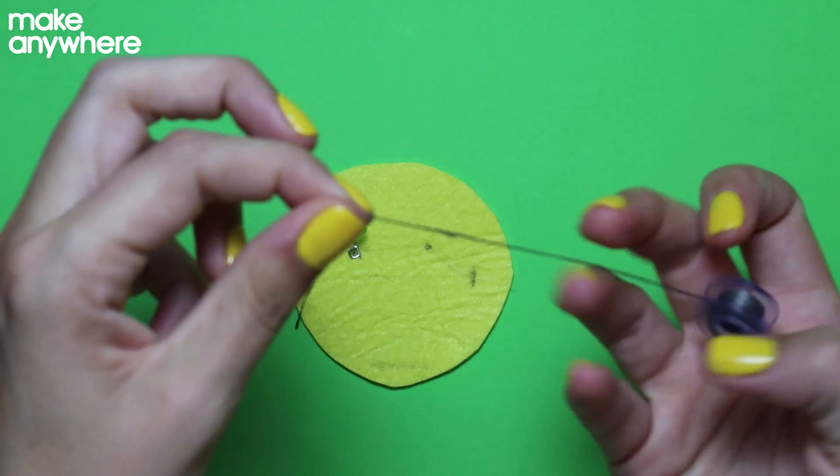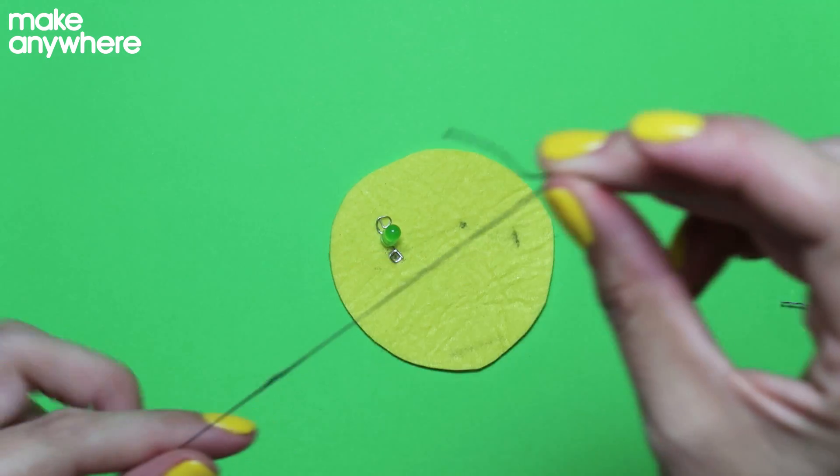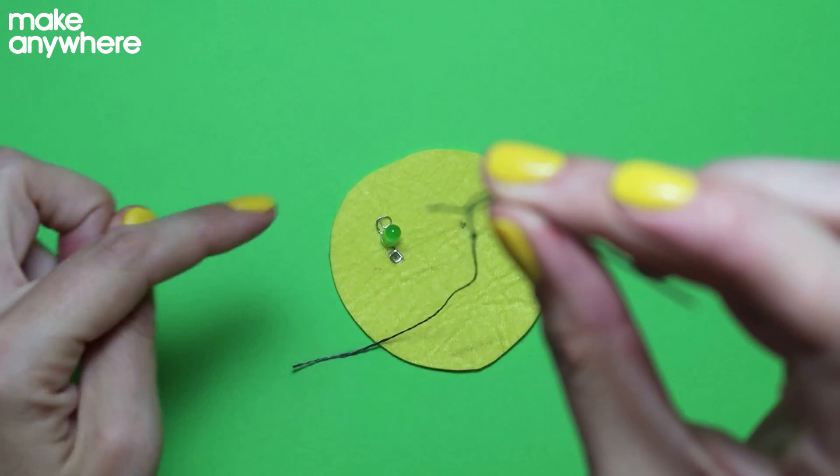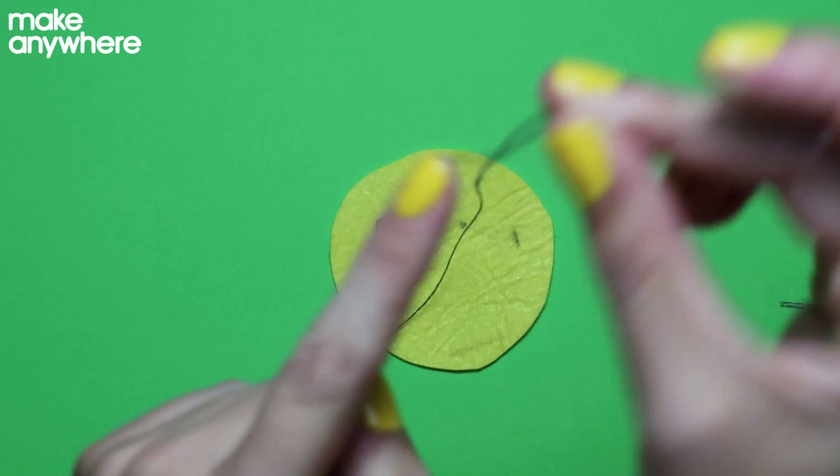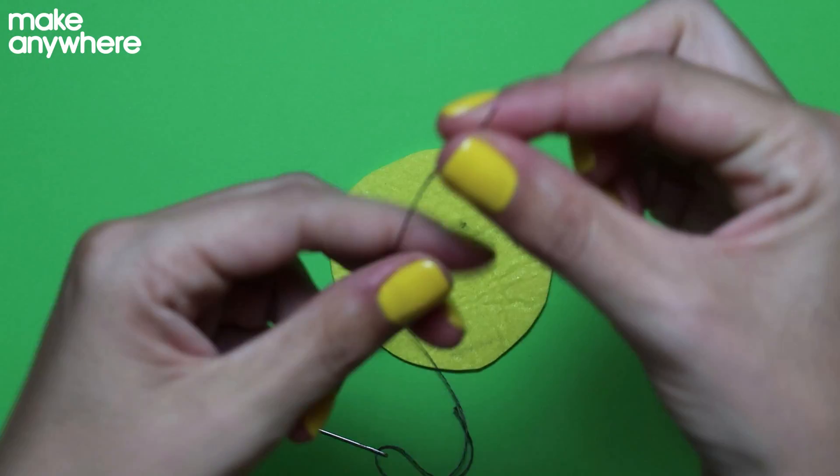Get your conductive thread and cut about 20 centimeters worth. Use your needle. You only need to do the single, so don't pull the other one down. You're just going to have one short tail and one long tail. At the end of the long tail, do a knot.